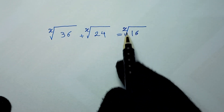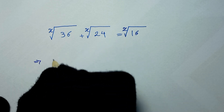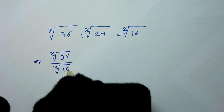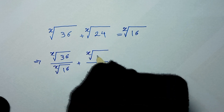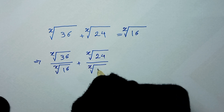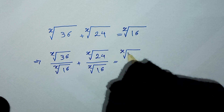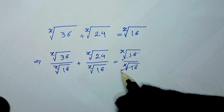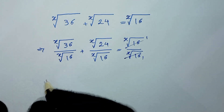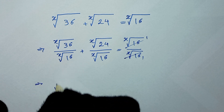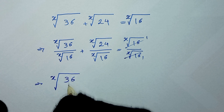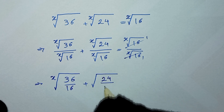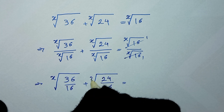So it will be: x-root of 36 over x-root of 16, plus x-root of 24 over x-root of 16, is equal to x-root of 16 over x-root of 16. This cancels to 1. We can write this as x-root of 36/16, plus x-root of 24/16, is equal to 1.